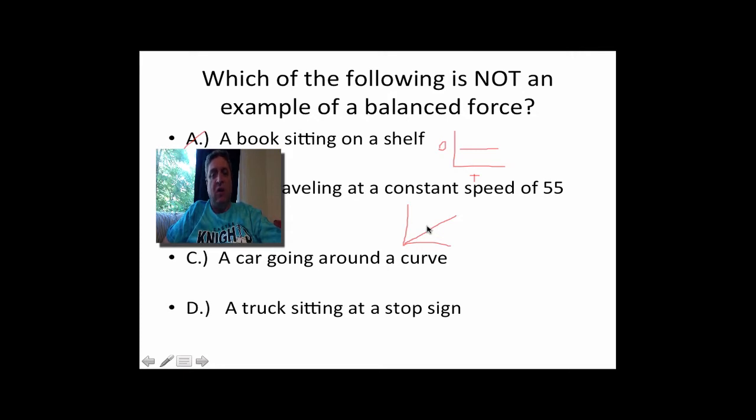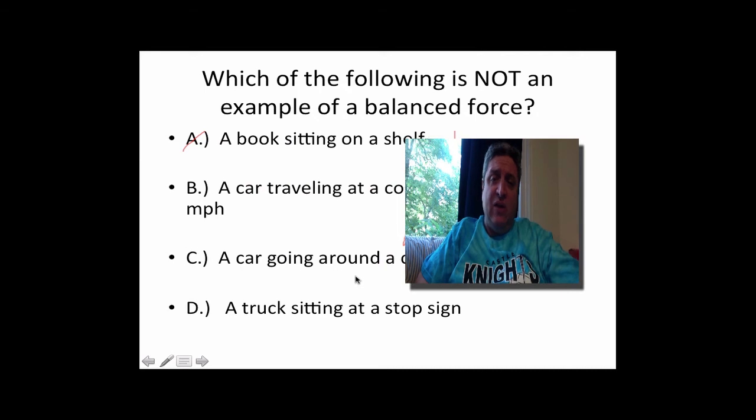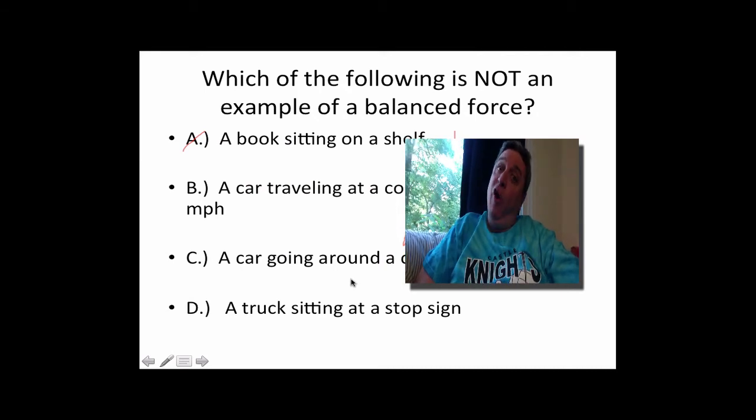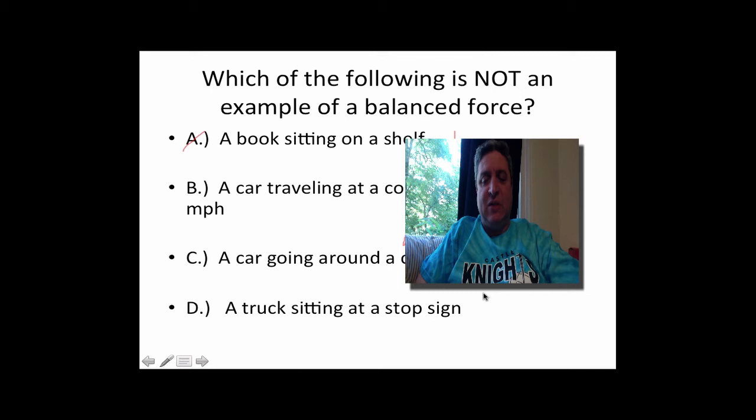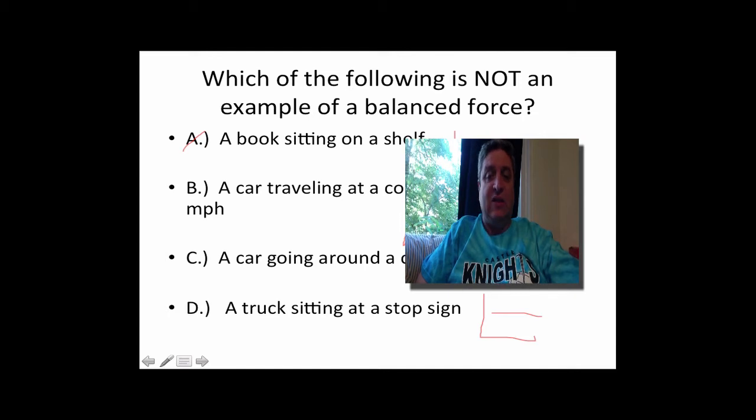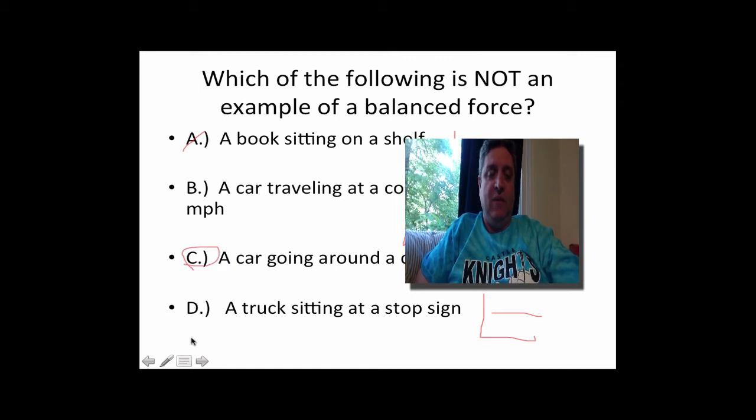C, a car going around a curve. Am I speeding up, slowing down, or changing direction? If I go around a curve, I'm definitely changing direction. So I'm going to hold on to that. D, a truck sitting at a stop sign, if it's sitting still, not moving. If my line is straight, whether it's flat or going at a constant speed, there's no net force. Going around a curve, I change direction. So that has to be my answer, it's C.